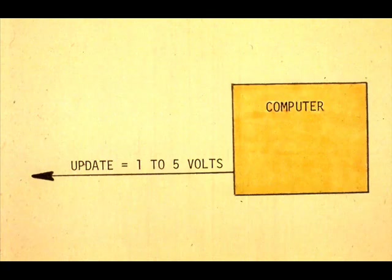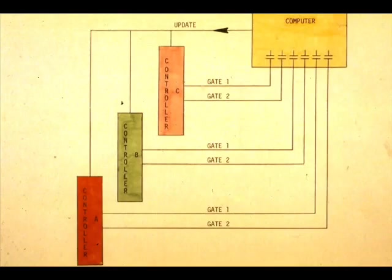The update signal is a 1 to 5 volt signal for this particular Veritrack system. Only the controller that has gates 1 and 2 operated will accept the update signal. Only one controller at a time will have both gates operated.